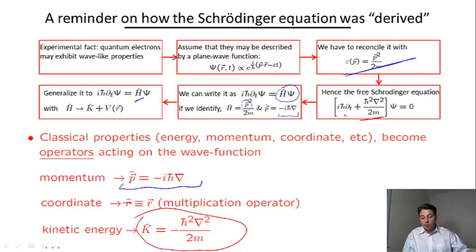It turns out that the appearance of operators was not unique just to this derivation of the Schrödinger equation, but they pop up throughout quantum theory whenever we deal with any analogues of classical properties.